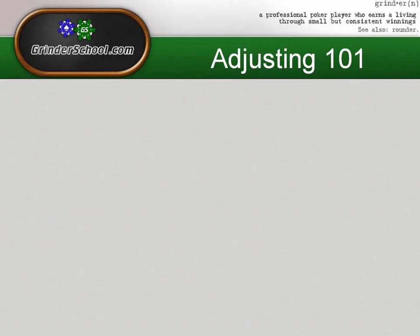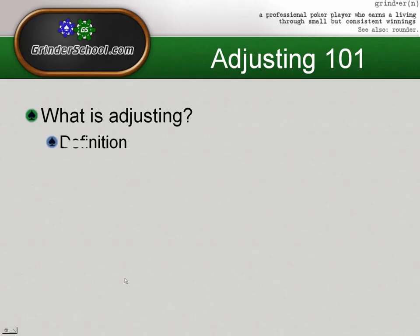Hey guys, this is Spendup for GroundedSchool.com with part four of my four-part lecture plus live play series on beating small and micro stakes, six max, no limit hold'em. This video wrapping up the series is going to be on adjusting to certain player types and the more typical types of players you're going to see at the lower limits. Before we get going I want to discuss a little bit about what adjusting is and we can look at a few definitions of the term.